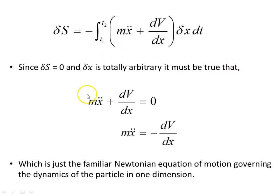For that to be true then, mx double dot plus dV/dx is zero, or mx double dot is minus dV/dx. This is just the familiar Newtonian equation of motion governing the dynamics of a particle in one dimension. So we've used the variation of the action, the principle of least action, to find the equations of motion for a particle in one dimension.